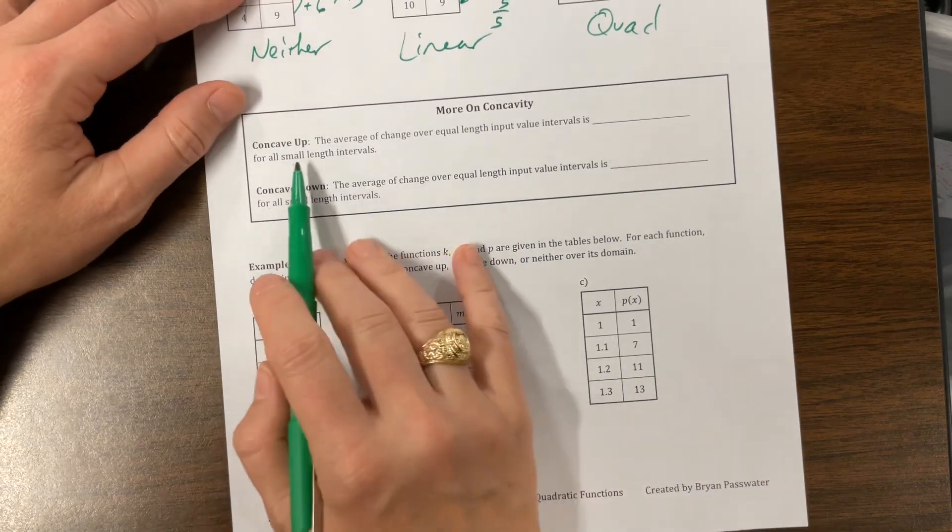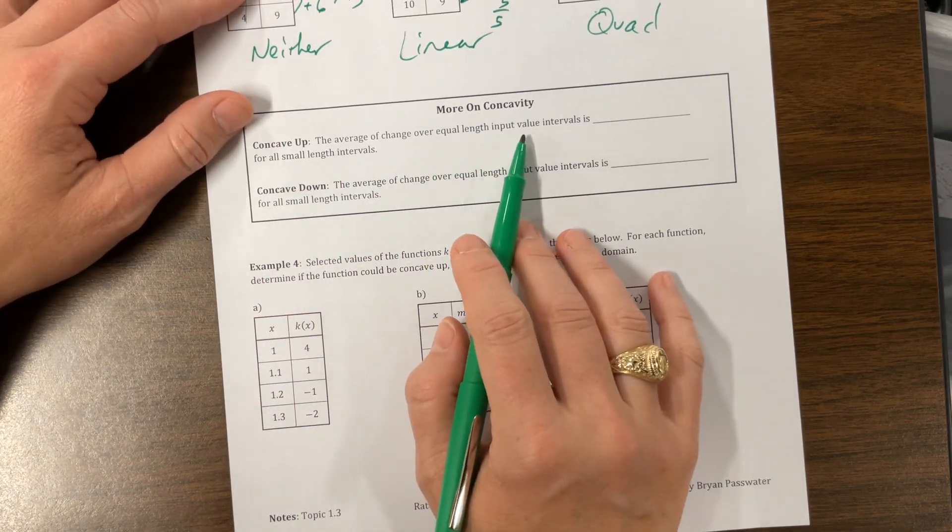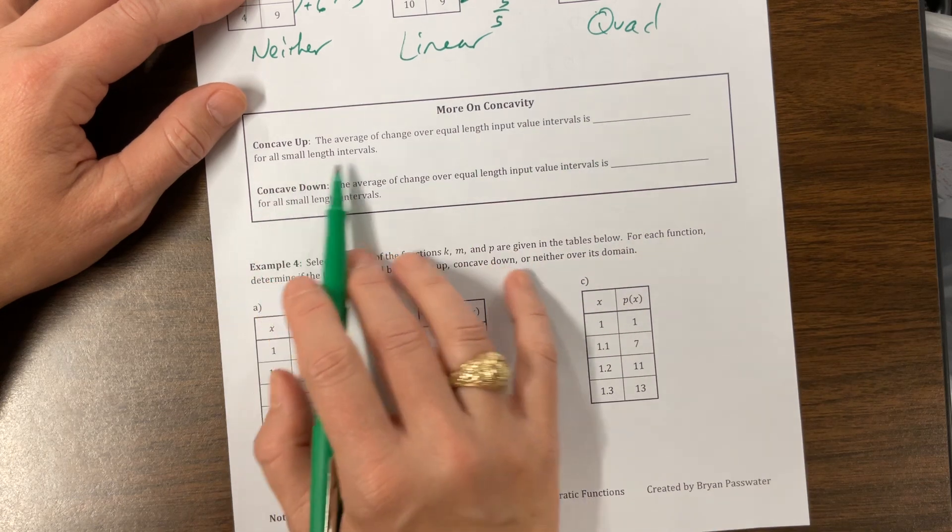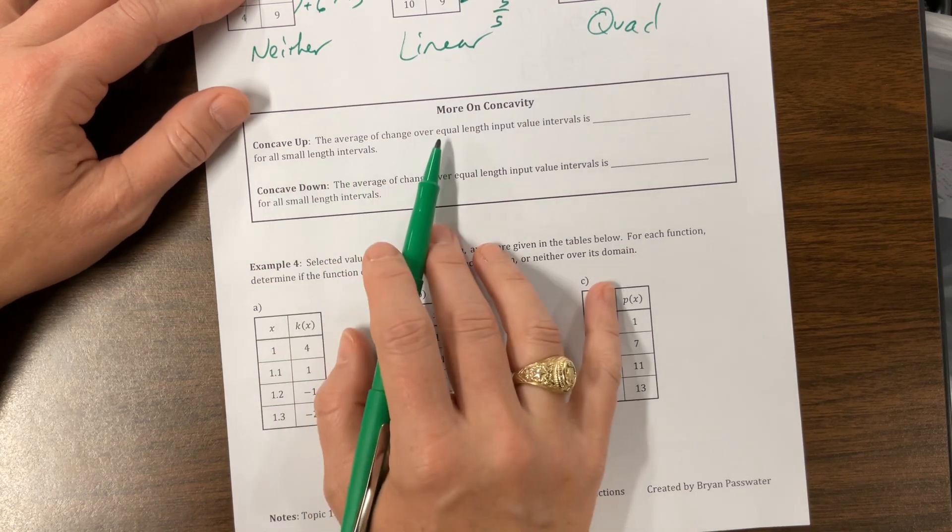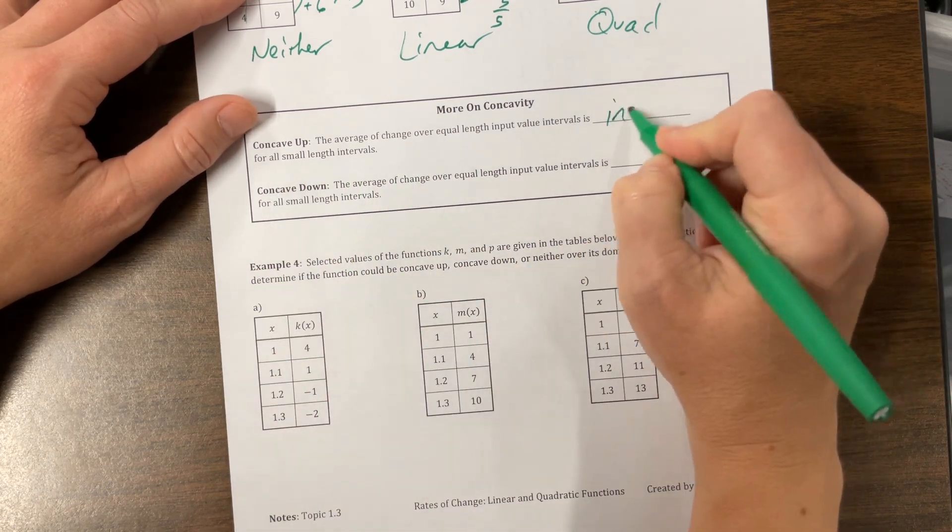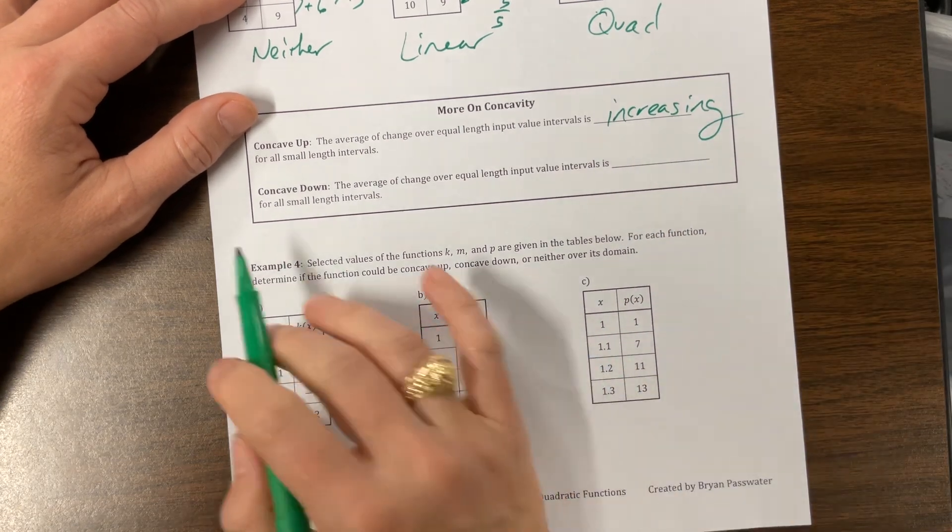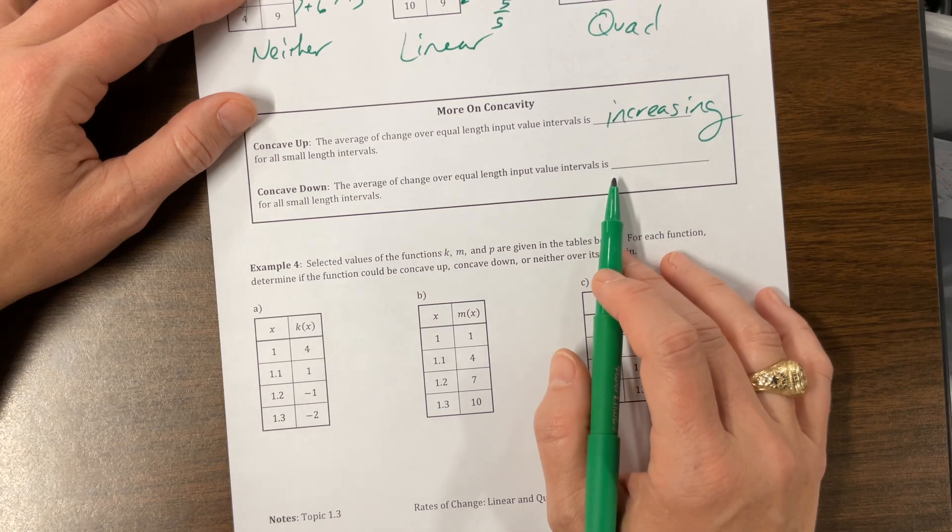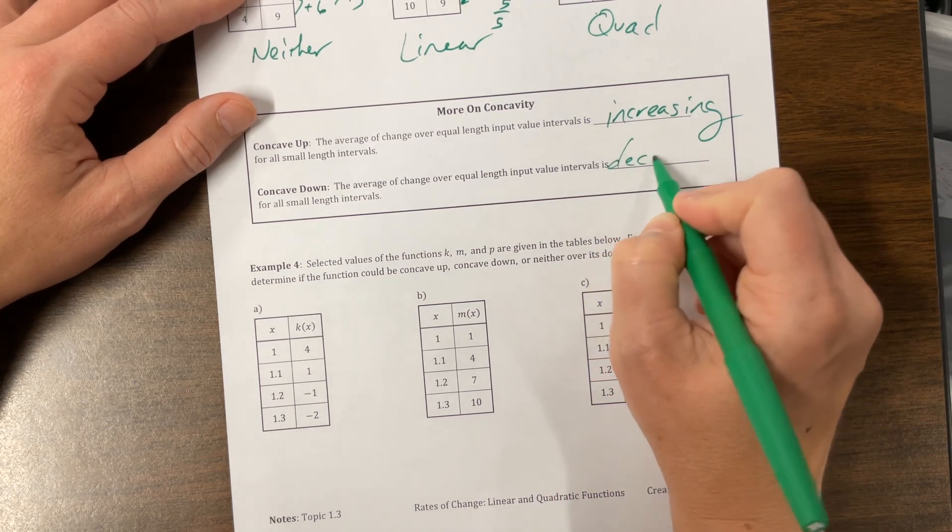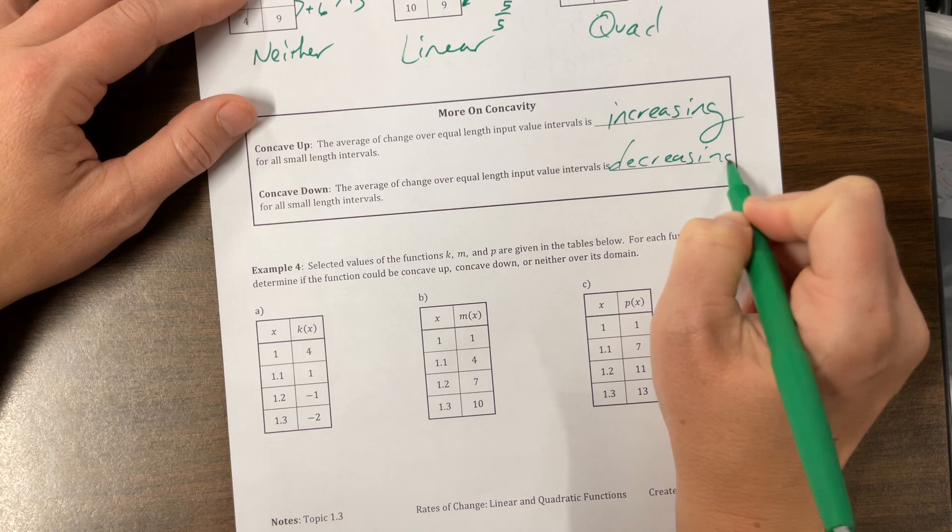More on concavity. The average rate of change over equal length input values intervals is blank for all small. If it's concave up, it's increasing. If the average rate of change is increasing, we're going to be concave up. The average rate of change over equal length input value intervals is decreasing when it's concave down.